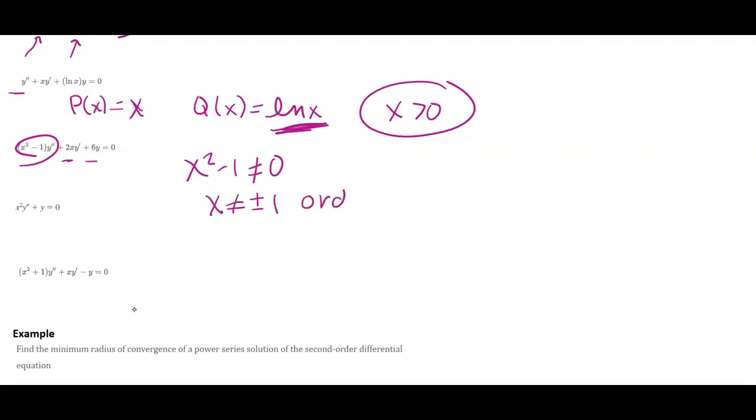So that would be our ordinary points. Or we could say X equals plus and minus one are these singular points. Similarly, here, at X equals zero, I would have a singular point.